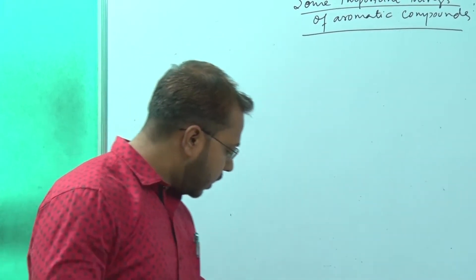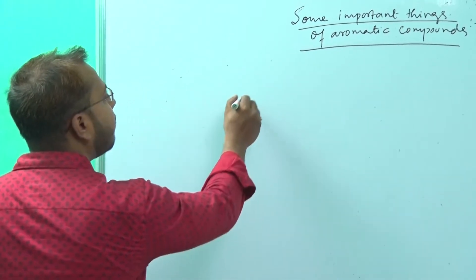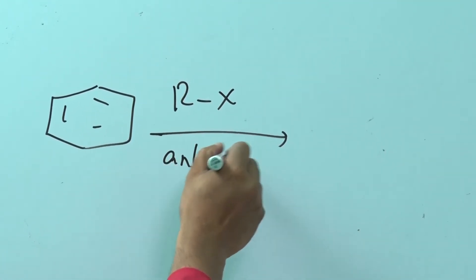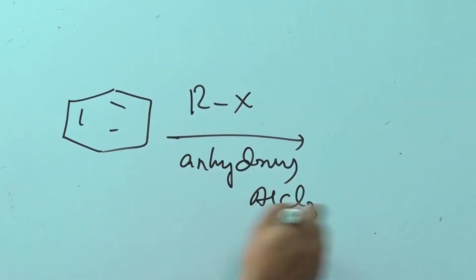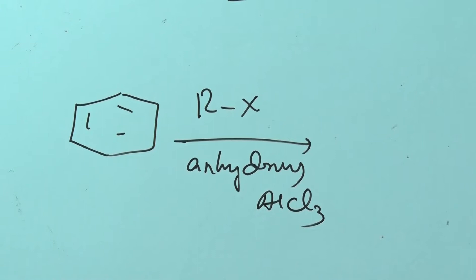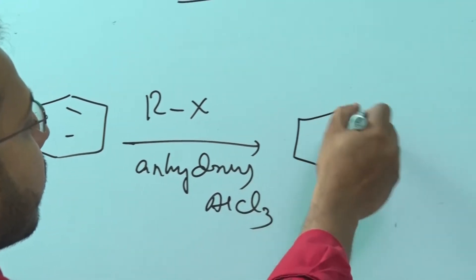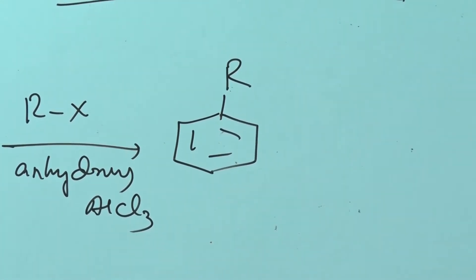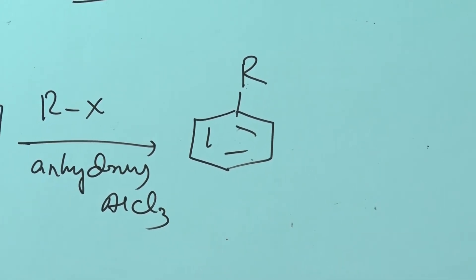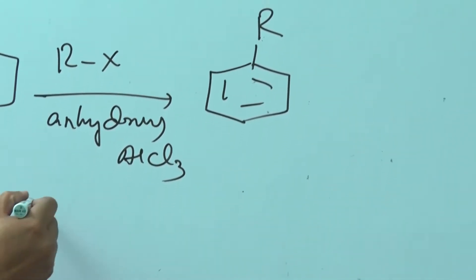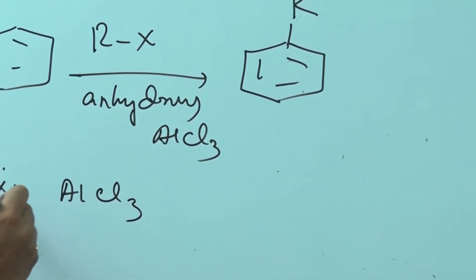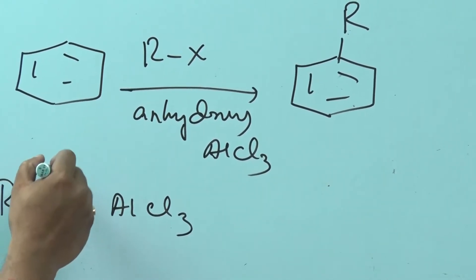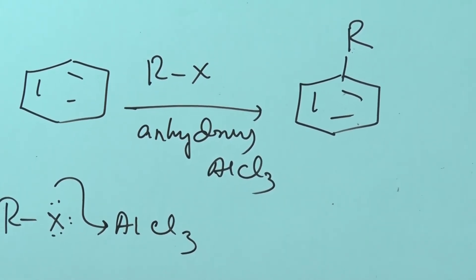So let's start. In Friedel-Crafts reaction, we have a benzene ring that will react with RX, and obviously anhydrous AlCl3 should be given. I will tell you the reason why anhydrous condition is maintained. Now, AlCl3 — aluminium has atomic number 13 — so it has a vacant 3p orbital. In this vacant orbital, X can donate its electrons.